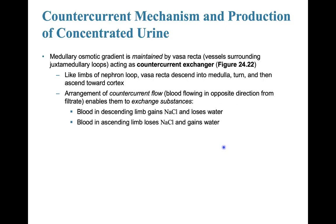The medullary osmotic gradient is maintained by the vasa recta vessels surrounding the ducts of medullary nephron loops, acting as a counter current exchanger. As the vasa recta descends into the medulla and then ascends towards the cortex, the counter current flow — blood flowing in the opposite direction from the filtrate — enables exchange of substances. Blood in the descending limb gains sodium chloride and loses water; blood in the ascending limb loses sodium chloride and gains water.